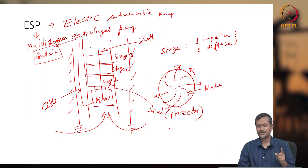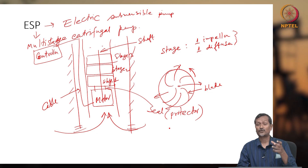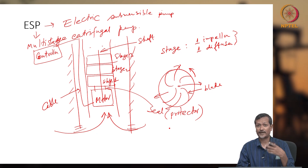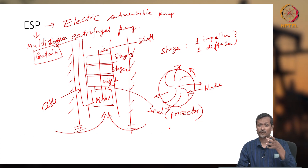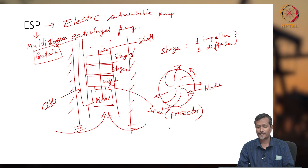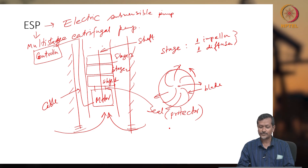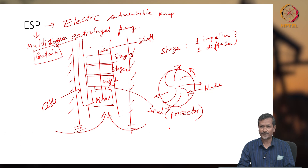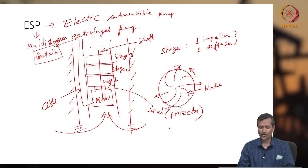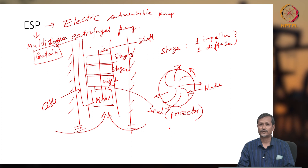There will be one shaft, and the shaft diameter is based on your torque requirement. If the torque requirement is very high, the shaft diameter will also be high. But normally they try to reduce the shaft diameter as much as possible so that more fluid area is available, the system lasts longer, and cost is lower.